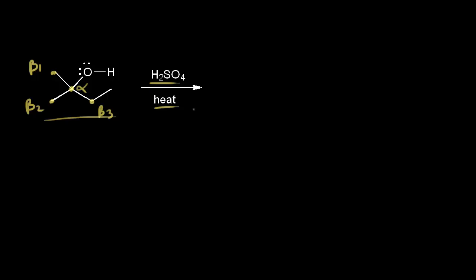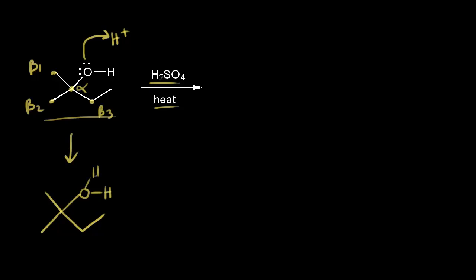We know that with an alcohol, the alcohol will be protonated by the sulfuric acid. So instead of drawing out the dot structure for sulfuric acid, I'll just write H+ here. Sulfuric acid is a source of protons, and one of the lone pairs of electrons on oxygen picks up that proton. So our first step is a proton transfer. One of the lone pairs, let's say this lone pair here in magenta, picks up a proton from sulfuric acid to form this bond.